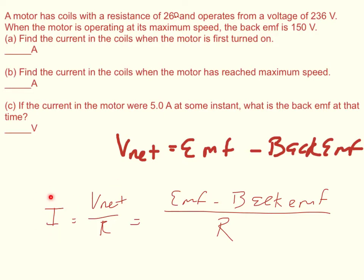And so whenever it's first started, the current is equal to the EMF minus zero, the max EMF minus zero divided by the resistance. And so you plug your numbers in there, or my numbers in it rather, the initial current that I get is 9.076 amps.